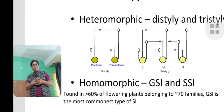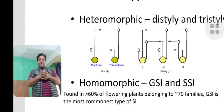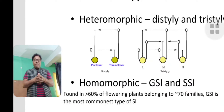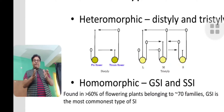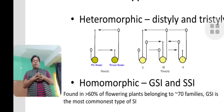Talking about the types of self-incompatibility, broadly there are two categories: heteromorphic and homomorphic. As the names suggest, heteromorphic means the flowers are morphologically different, and homomorphic means the flowers are morphologically the same. In most cases we have homomorphic, where the structure of the stamen or the pistil will be the same.